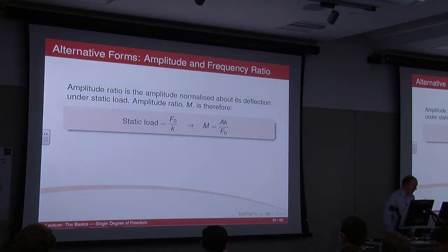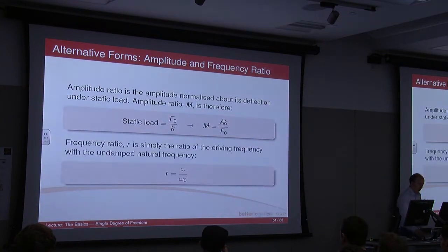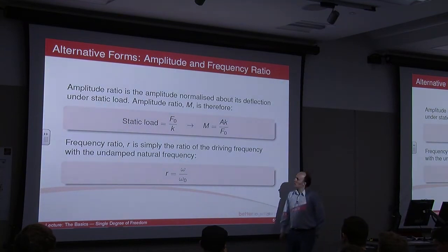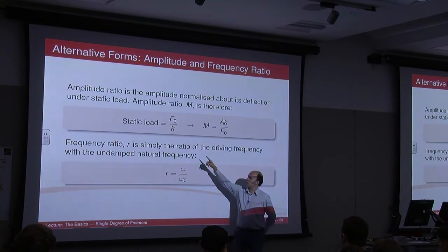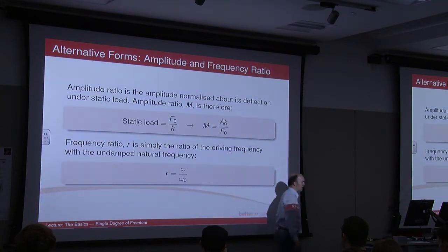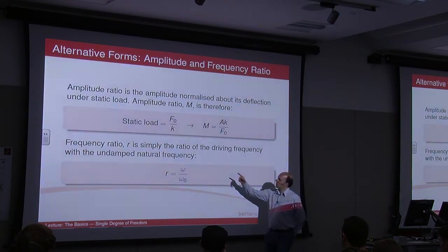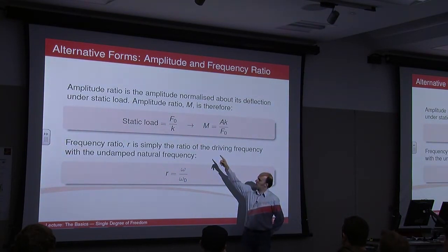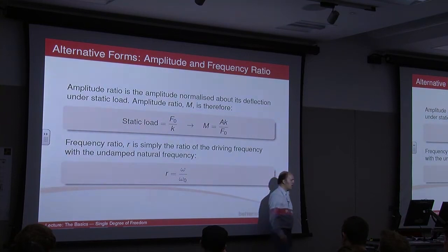Moving on to talk about amplitude and frequency ratio. We did cover this slightly last week, when we looked at the graphics that go with that. Damping ratio is defined as M, and that's the amplitude over the amplitude at static load. Now, static load we covered last week. Basically, that's the spring equation. That's the deflection. When a is the deflection, a equals f naught upon k.